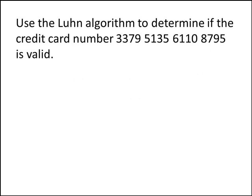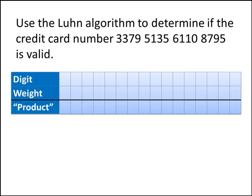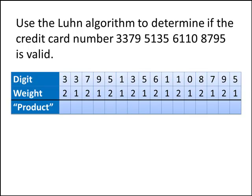So let's see how this works. So again, we've got our 16-digit credit card number, and we're trying to use the Luhn algorithm to determine if it's valid. So we'll make a little chart, and in the first row of our chart, we'll write down all of the digits of our credit card number. In the second row of our chart, we'll put down all the weights. Again, our pattern is 2, 1, 2, 1, 2, 1, and so on.